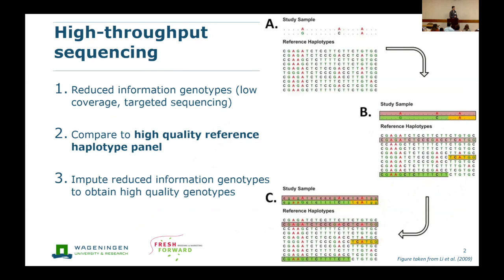There's a method already widely adopted in human studies that uses reduced-information genotypes together with a high-quality reference haplotype panel in order to impute the reduced-information genotypes. In the top right corner you have some study samples, and if you compare them to your library of haplotypes you can find the best matching haplotypes and in the end you can impute them. Sounds very simple — it's not very simple. But that's why we want to make a core collection.